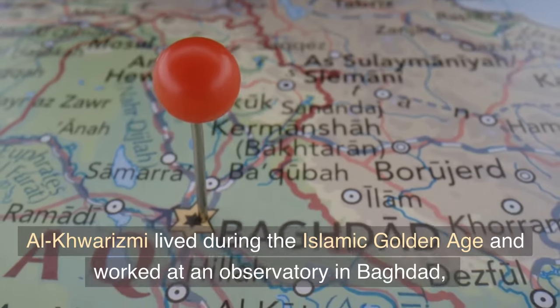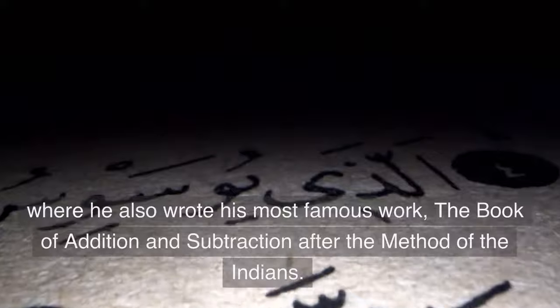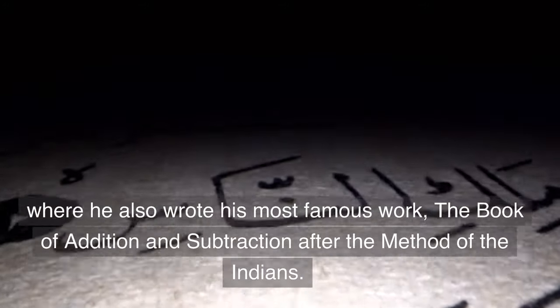Al-Khwarizmi lived during the Islamic Golden Age and worked at an observatory in Baghdad, where he also wrote his most famous work, The Book of Addition and Subtraction After the Method of the Indians.